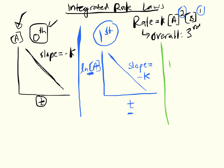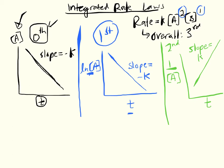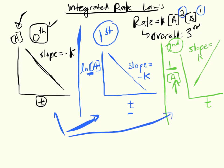Last but not least, if we plot the reciprocal 1/[A] versus time and get a straight line, the positive slope equals K — this represents a second order reaction with respect to A. This should ring a bell from the crystal violet lab where we used the spectrophotometer and Excel graphs of all three plots to figure out which graph had the straightest line, which tells you the order with respect to that reactant.